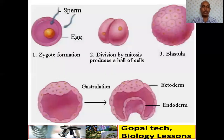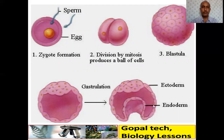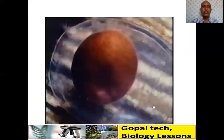After the blastula stage, the embryo undergoes gastrulation. Gastrulation produces three germ layers: ectoderm, endoderm, and mesoderm. You can see here the first and second divisions occurring, then continuously redividing.